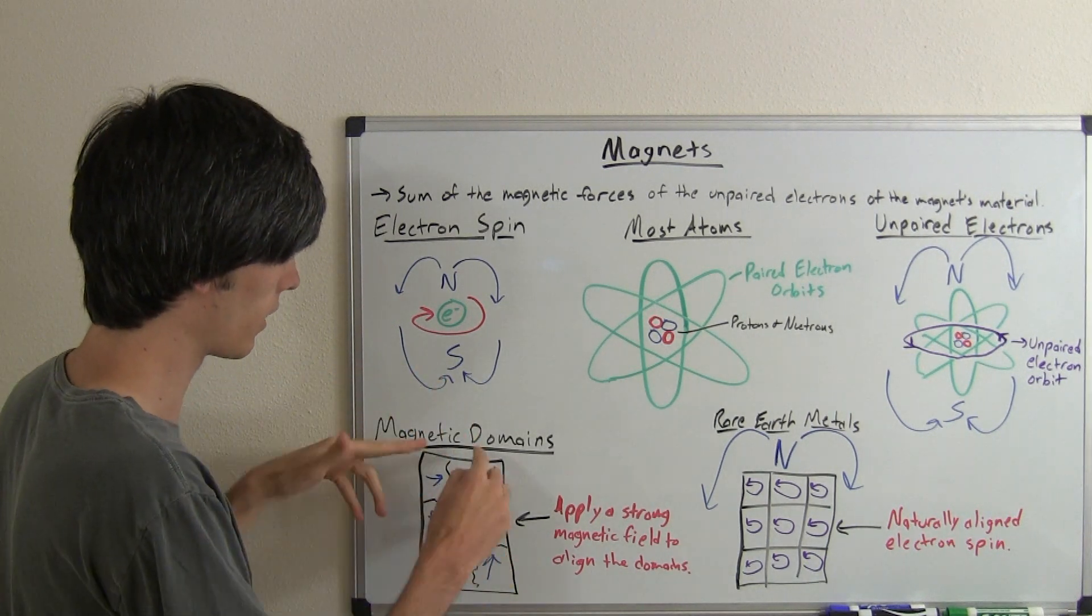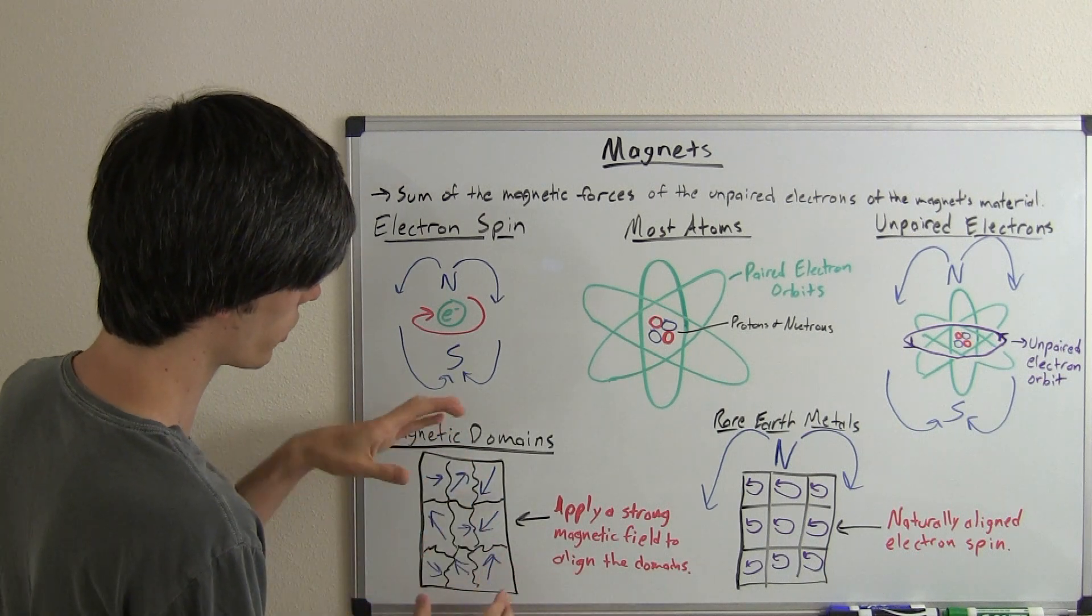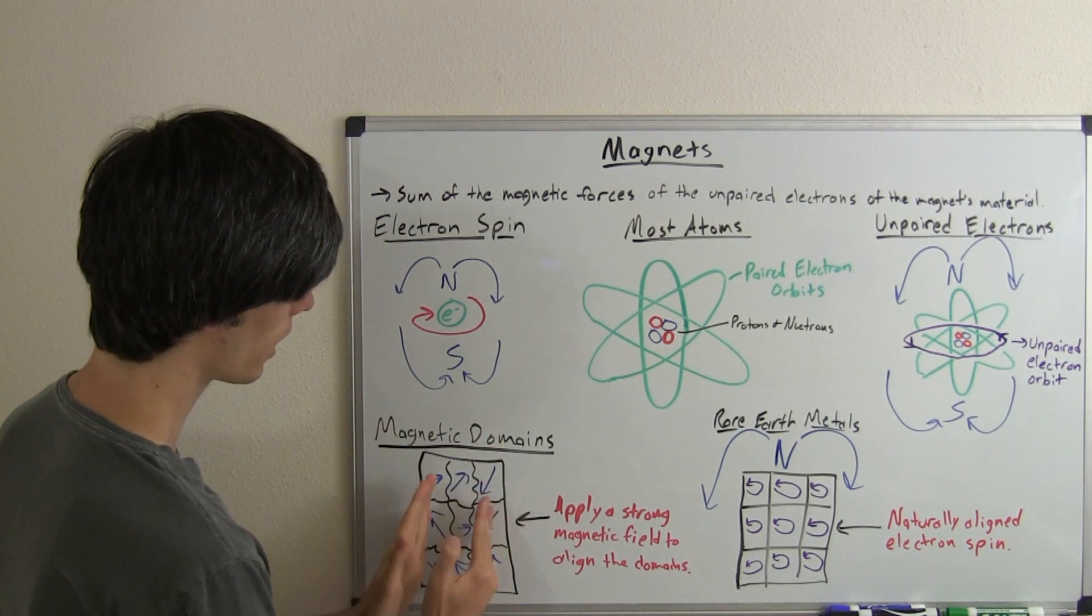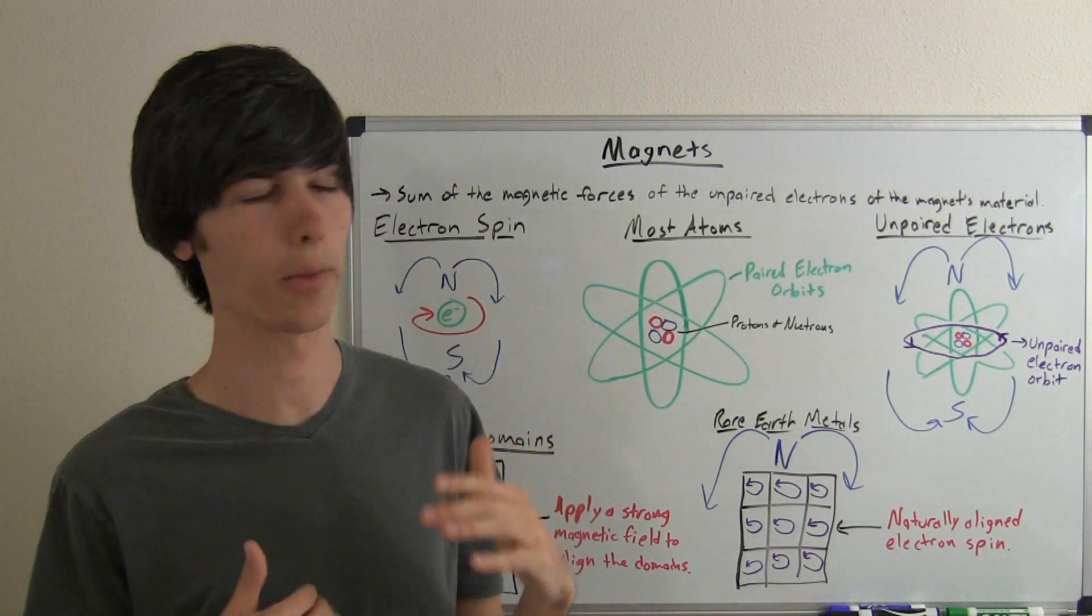So the way you can get these aligned is to apply a very strong magnetic field, and by applying a very strong magnetic field to this you can align these magnetic domains and then you will have a magnet with a north and south pole.